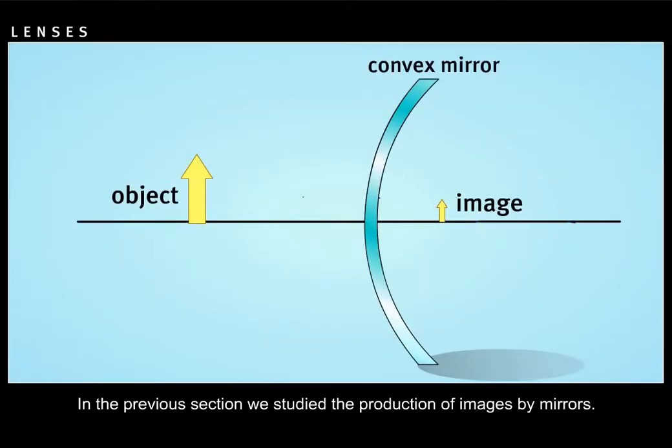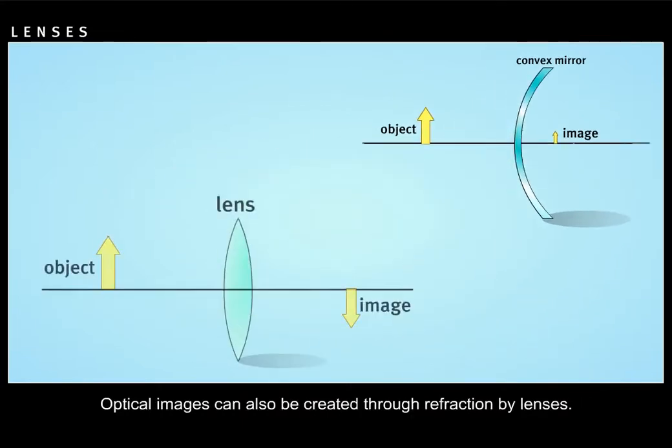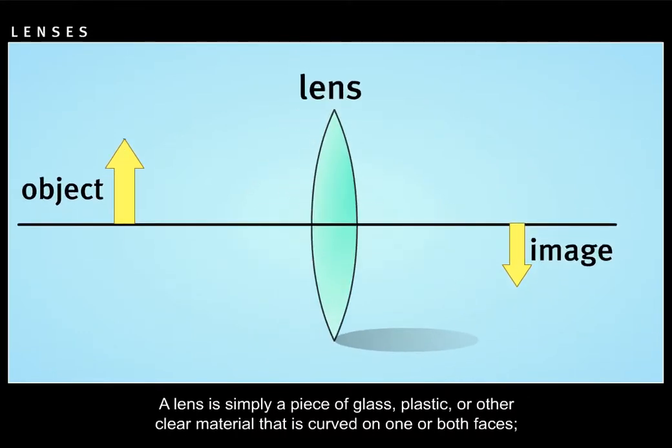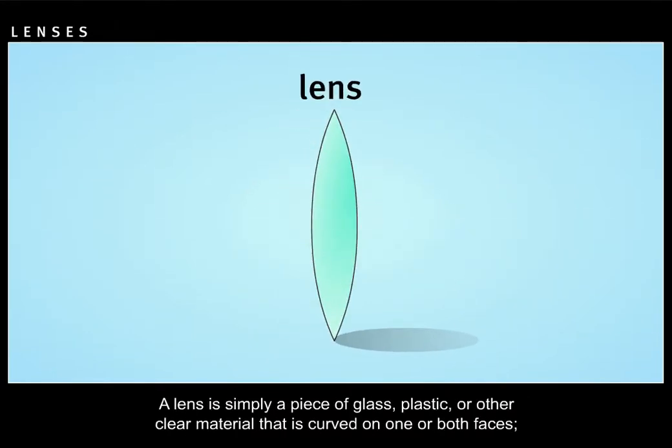In the previous section we studied the production of images by mirrors. Optical images can also be created through refraction by lenses. A lens is simply a piece of glass, plastic, or other clear material that is curved on one or both faces.